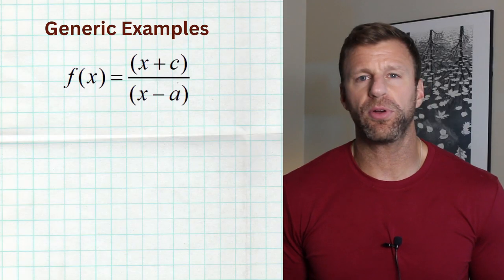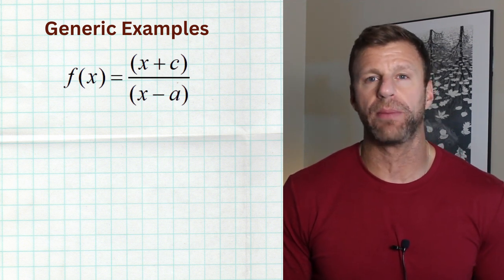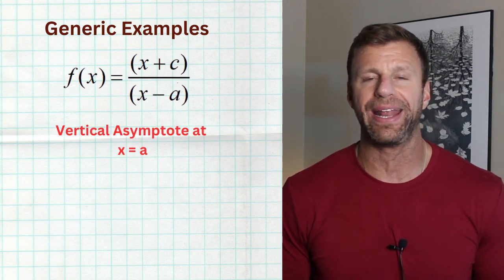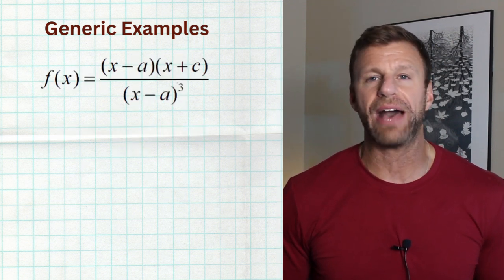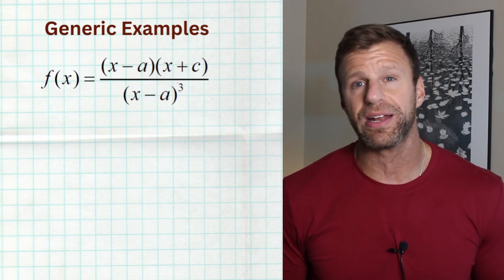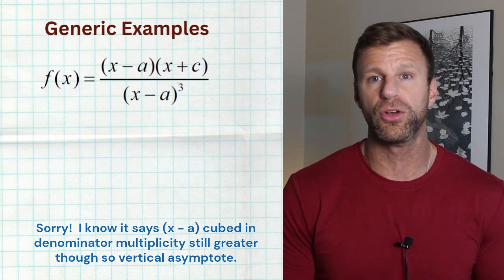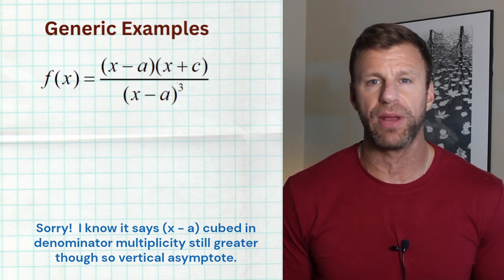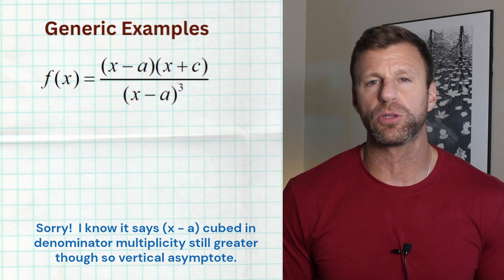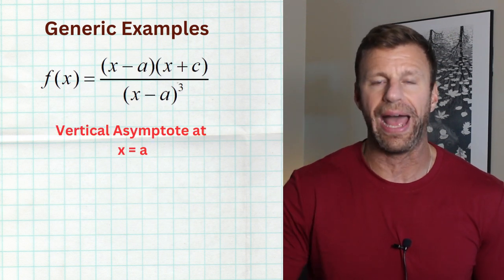Let's look at some generic examples. In this first example, we have x plus c over x minus a. We notice that a only makes the denominator zero, so we have a vertical asymptote at x equals a, and negative c is just a zero in the numerator, which is totally fine. In the next example, we have x minus a times x plus c in the numerator, and x minus a squared in the denominator. Now we have a shared factor x minus a, so a makes both the numerator and denominator zero. But the multiplicity of a is greater in the denominator — multiplicity two in the denominator versus one in the numerator — so we also have a vertical asymptote at x equals a.